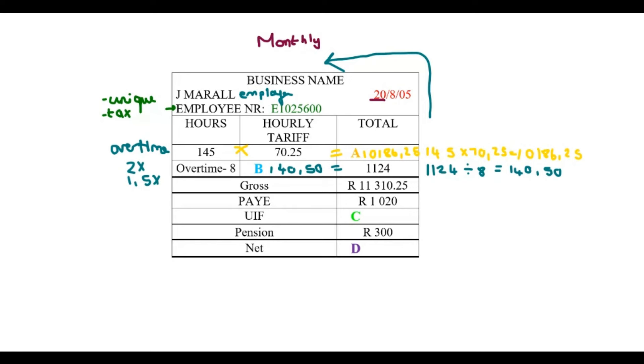Moving on to the gross, which is kind of the total that he got this month. How did I determine this 11,000? I said the yellow number, the normal hours, the A, plus the overtime hours. So I said 10,186.25 plus 1,124. And that gave me 11,000.